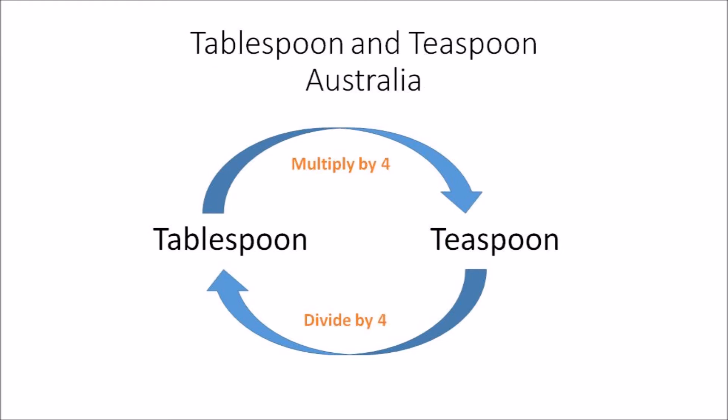In Australia, since one tablespoon equals four teaspoons, to convert tablespoons to teaspoons you multiply by four, and to convert teaspoons to tablespoons you divide by four.